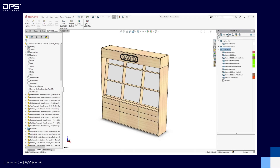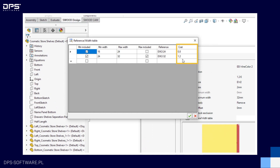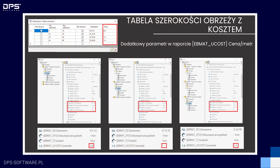Kolejna nowość to wprowadzenie kosztu do tabeli obrzeży. Dotychczas, aby rozdzielić różne szerokości oklein z podziałem na koszt, musieliśmy tworzyć oddzielne obrzeże, ustawiając zakres grubości panelu, do którego można zastosować dane obrzeże. W nowej wersji wprowadzono opcję kosztu do parametru odniesienia tabela szerokości, pozwalającego na utworzenie różnych opcji szerokości danego obrzeża. Po wygenerowaniu raportu znajdziemy nowy parametr — cena łamana na metr — który określa cenę przyporządkowaną do obrzeża o danej szerokości, dopasowanej na bazie grubości panelu.